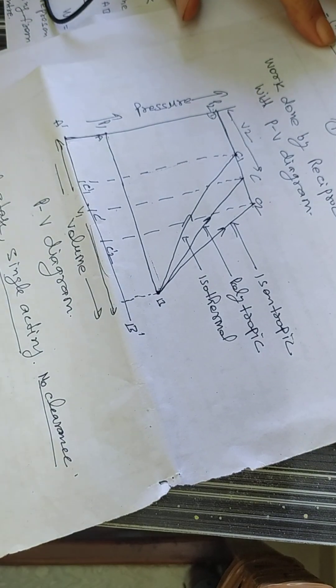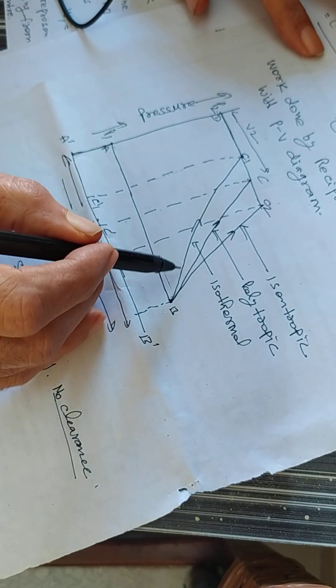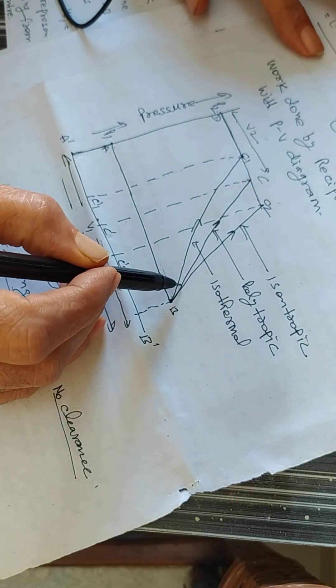Now, work done during the polytropic process compression. The polytropic process is represented by the middle line on the PV diagram.